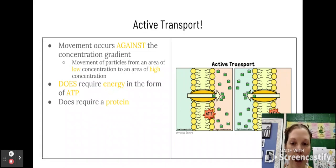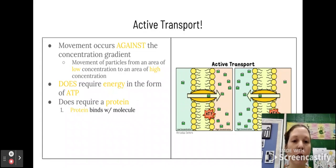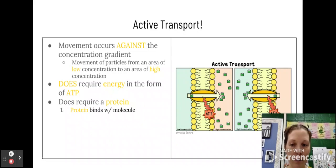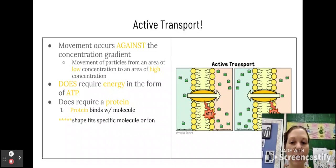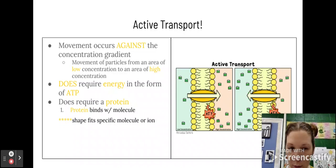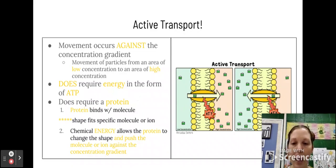So it does require a protein. This cannot happen on its own. And the protein will bind with the molecule. Specific shape fits a specific molecule or ion. So think about what we talked about in the past that has to have a specific shape lock into it. What kind of proteins are we looking at here? And then chemical energy will allow the proteins to change the shape and push the molecule or ion against the concentration gradient. So it will allow it to change the shape of the protein to get that ion on the side of higher concentration.